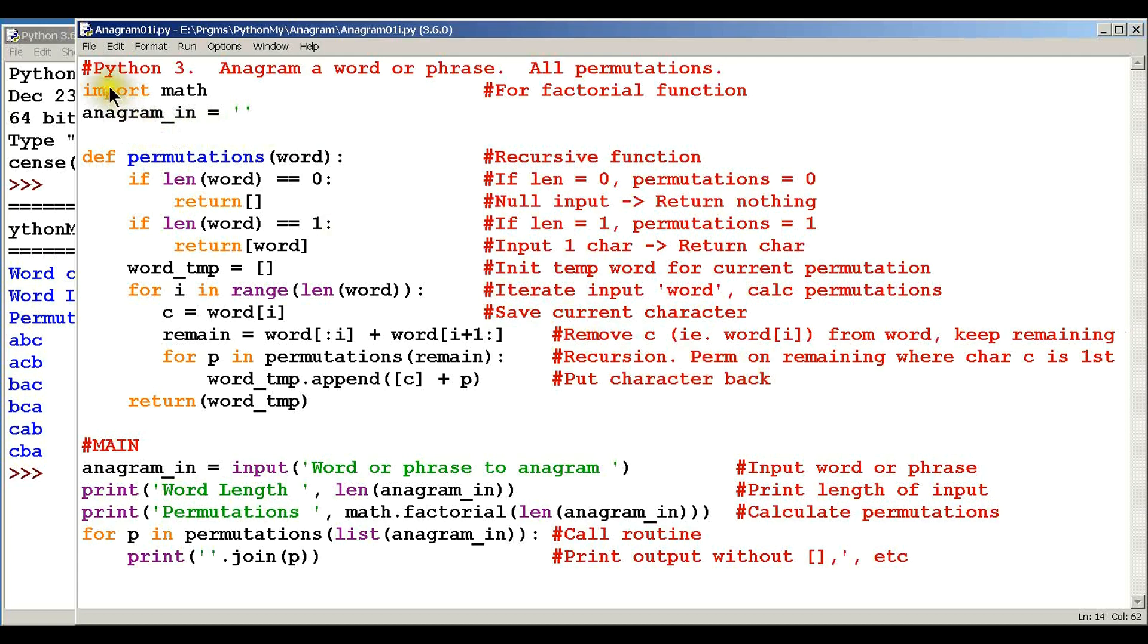Today I've got a program in Python 3 that I wrote, and what it does is it creates an anagram of a word or a phrase. An anagram is where, for example, if you start with ABC, it does ACB, BAC, BCA, CAB, and CBA. There should be six of these. With three letters you should have six permutations. That's what it does - it creates all of the different permutations of a word or phrase.